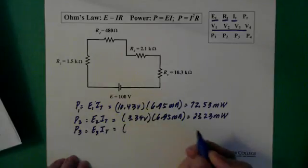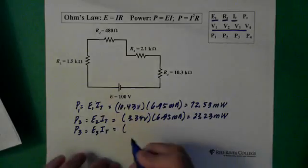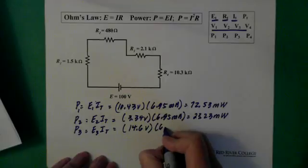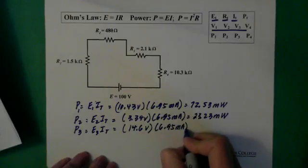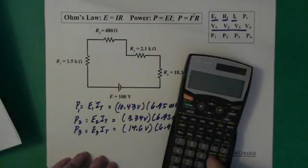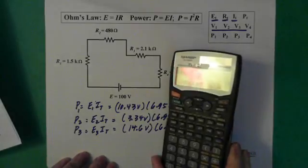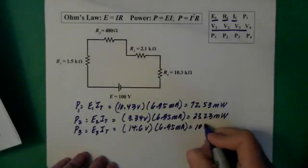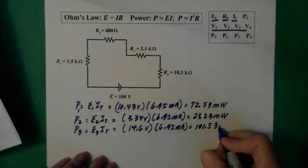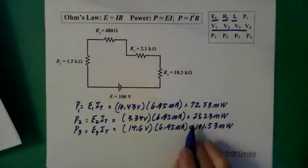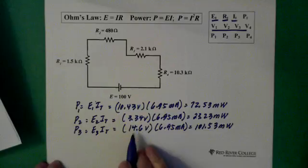Power 3, again same formula. Voltage 3 is 14.6 times 6.95 milliamps, 14.6 times our current equals 101.53 milliwatts. Now I'm noticing a change, but it makes perfect sense, we have a higher voltage here.